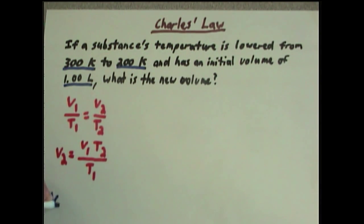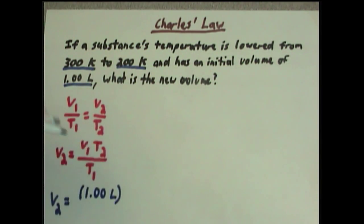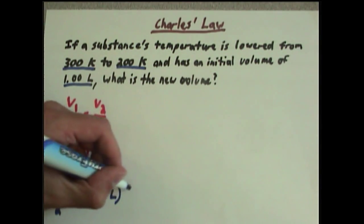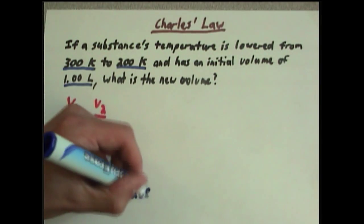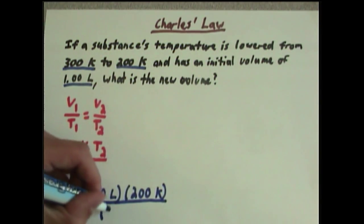So V2 equals V1. Now, if you notice here, it's lowered from, so we know 300 is our initial temperature. So that would be T1 on the bottom. V1 is 1 liter, obviously. And T2, like we just said, 200 degrees Kelvin, divided by the initial temperature, which was 300.